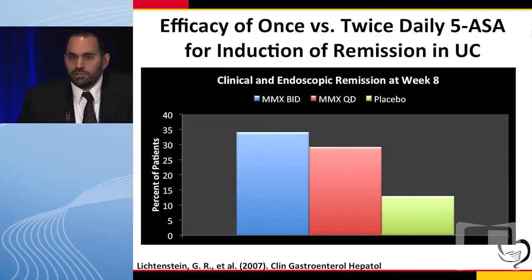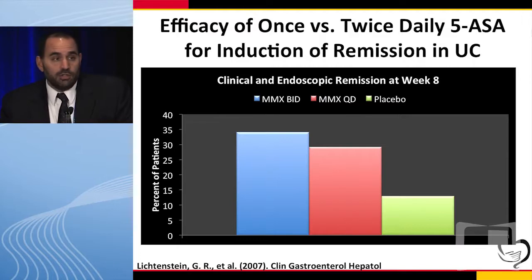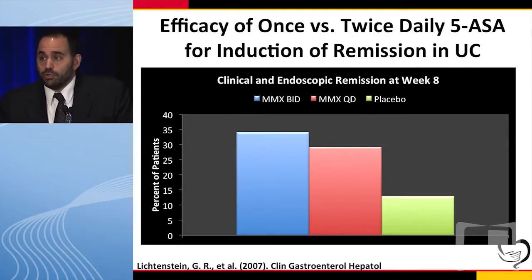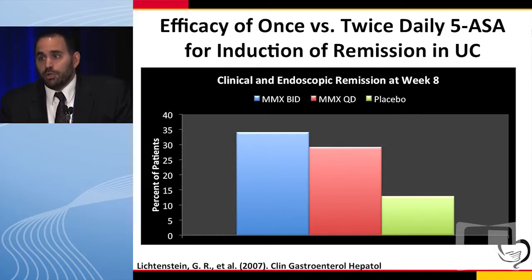Another question is whether you need to give divided doses of your 5-ASA or can you give once-daily dosing. Most of us are giving no more than twice-daily dosing, but this study looked at Lialda and compared 2.4 grams twice a day to 4.8 grams once a day, as well as placebo. Both active arms outperformed placebo, and there's only a minor numerical difference between the two groups. So this study suggests you can use once-daily dosing, and in my practice I almost always use once-daily dosing when prescribing 5-ASAs.